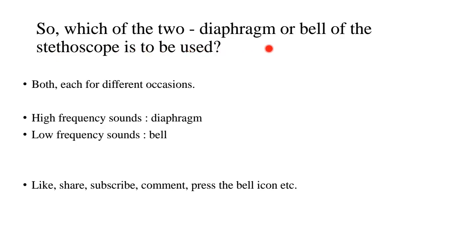Which of the two — diaphragm or bell of the stethoscope — is to be used to auscultate these various murmurs of different frequencies? The answer is both, each used for different occasions. If there are high-frequency sounds, like with mitral regurgitation, then use the diaphragm. If there are low-frequency sounds, like the diastolic rumble of mitral stenosis, use the bell. Like, share, subscribe, comment and press the bell icon, and I'll see you next time with another video.